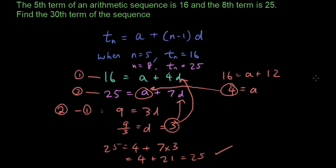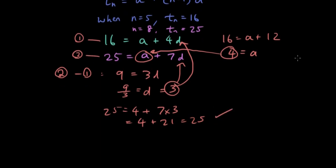So the answer is tn—sorry, not the answer. The equation is 4 plus n minus 1 times 3. Okay, that is the general equation or formula for our arithmetic sequence.